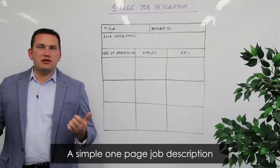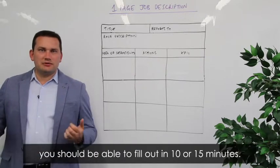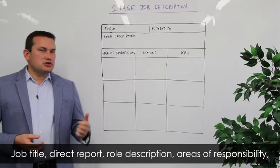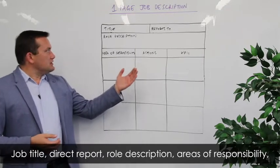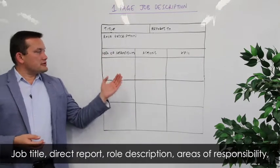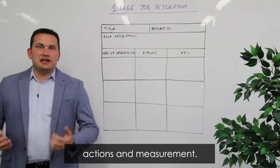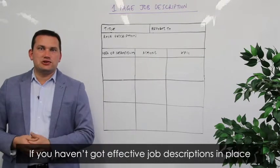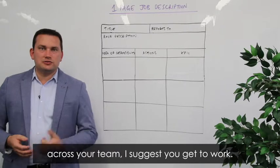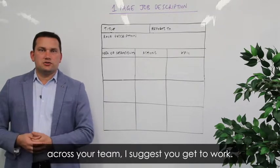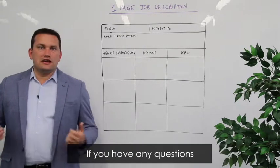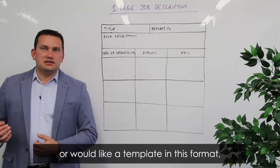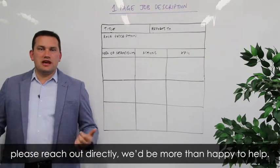And that's it — a simple one-page job description you should be able to fill out in 10 or 15 minutes: job title, direct report, role description, area of responsibility, actions, and measurement. If you haven't got effective job descriptions in place across your team, I suggest you get to work. If you've got any questions or would like a template in this format, please reach out directly — we'd be more than happy to help.